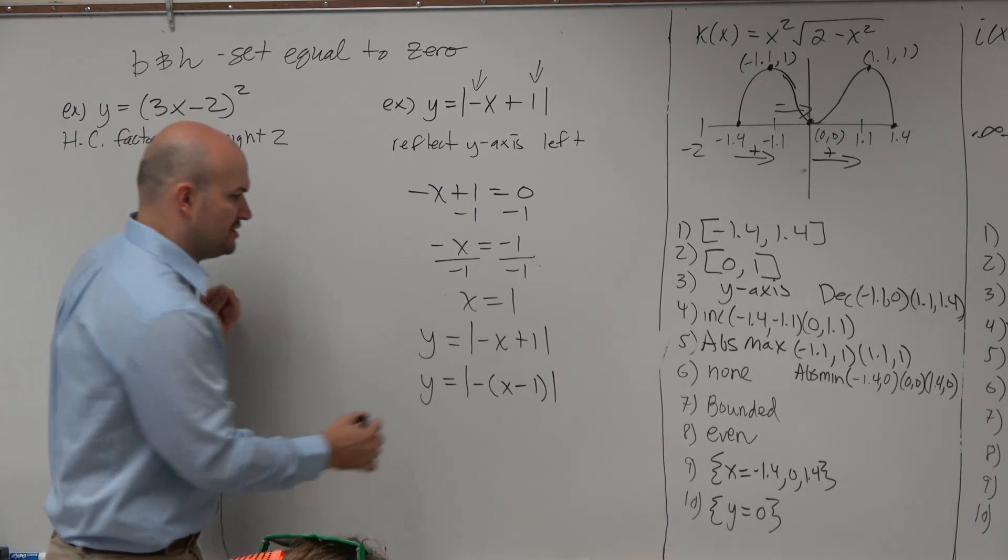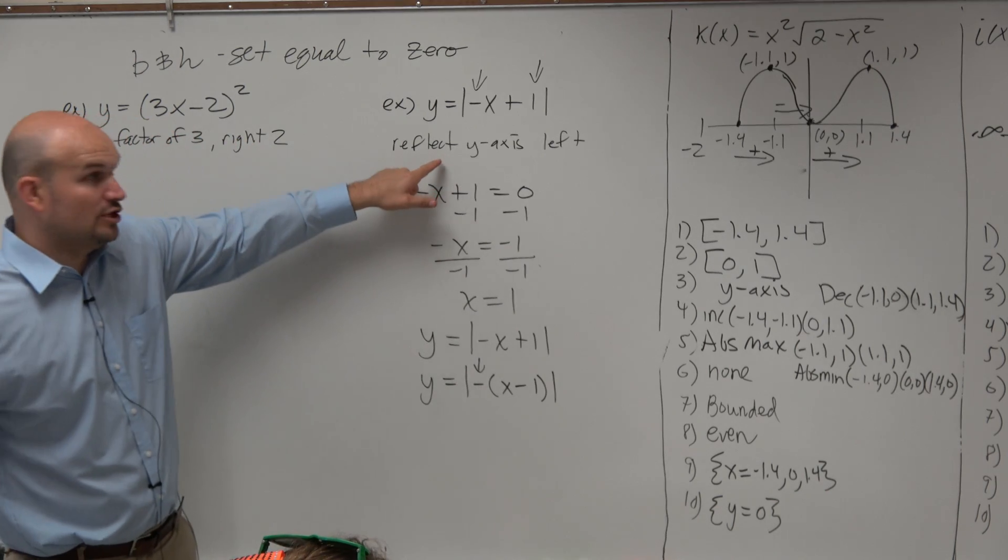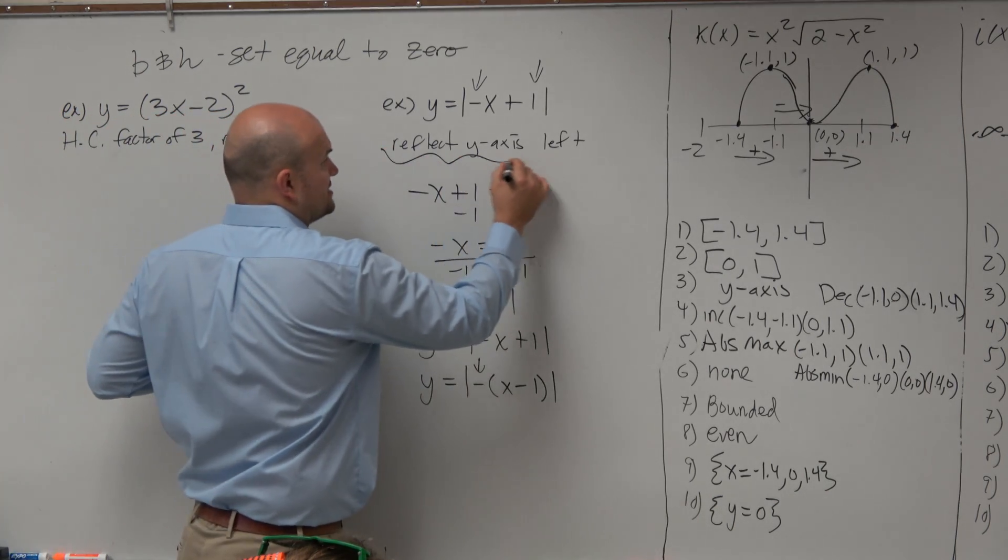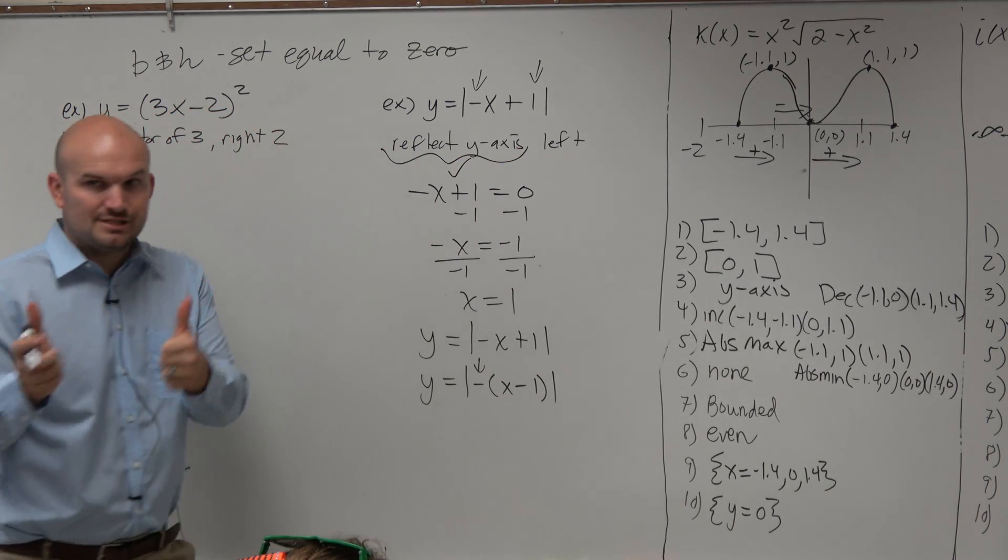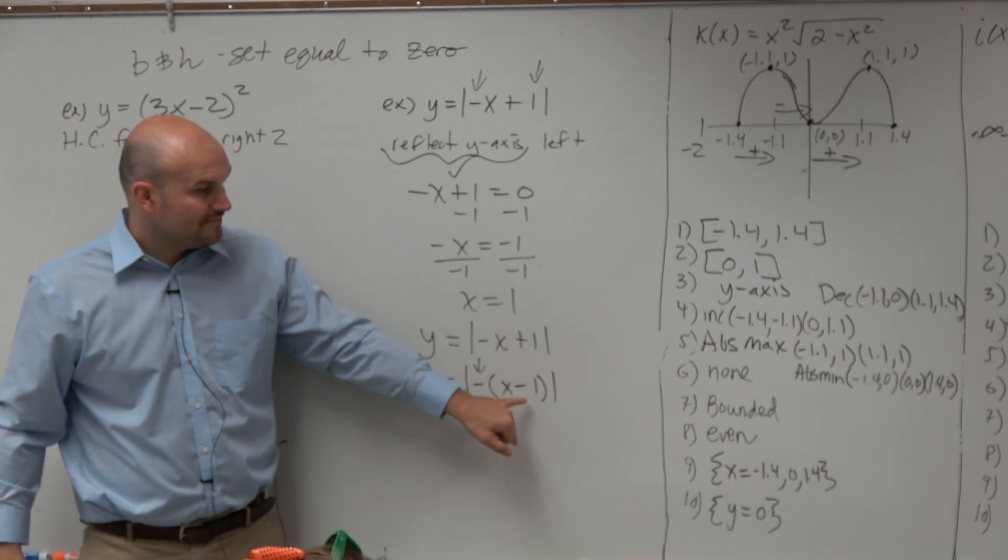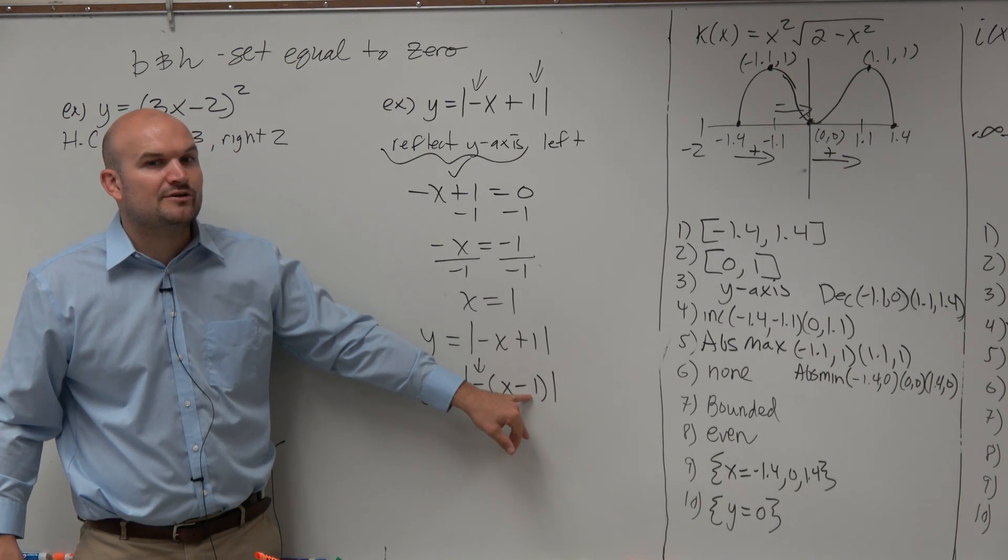Now, look at your b and your h. b is negative, which still reflects about the y-axis. So that still remains the same. That's still good. But now, what is that x minus 1? What is now your h?